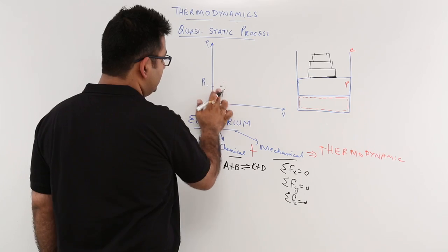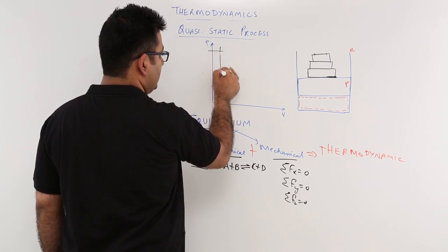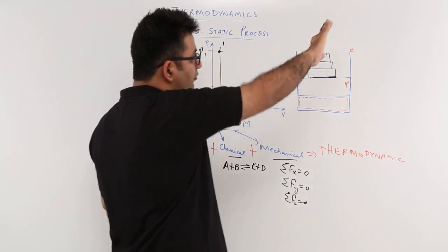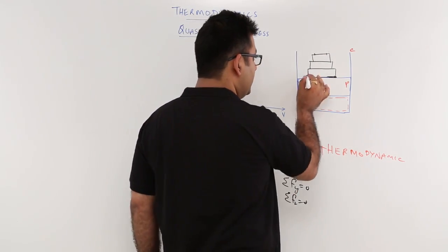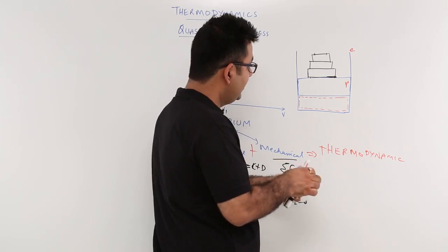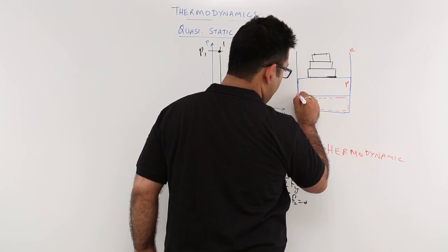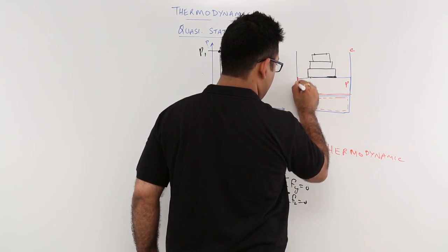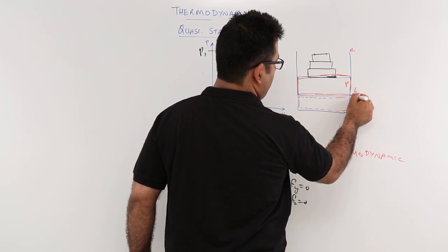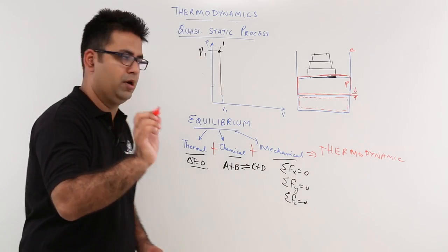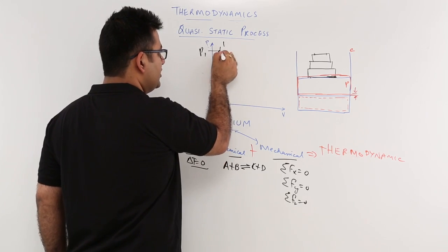When you remove the top weight, the pressure reduces a bit and the volume increases a bit. The piston moves to a new position — not very far, just a very small distance. This is a very, very small distance through which the piston is moved. The pressure has dropped a small amount and this is the new state.